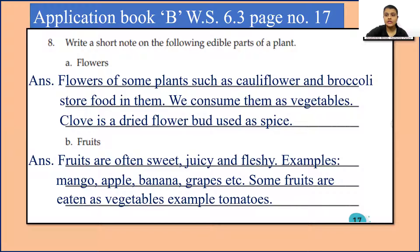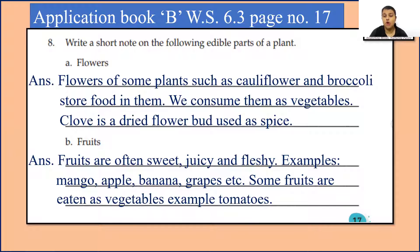Okay, question 8: Write a short note on the following edible parts of a plant. First, flowers. Flowers of some plants, such as cauliflower and broccoli, store food in them — we consume them as vegetables. Clove is a dried flower but used as a spice; in Hindi we call it laung. Second, fruits. Fruits are often sweet, juicy and fleshy. Examples: mango, apple, banana, grapes. Some fruits are eaten as vegetables — for example, tomatoes.